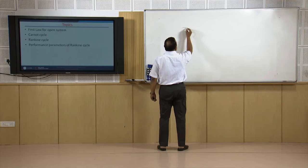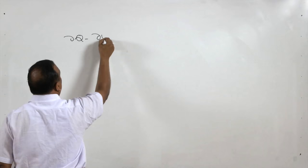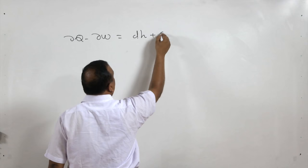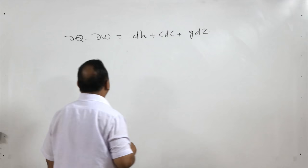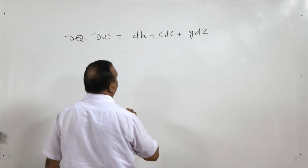The first law for an open system states that dQ minus dW equals dH plus C·dC plus G·dZ, where C·dC is the change in kinetic energy, G·dZ is the change in potential energy, and dH is the change in enthalpy.